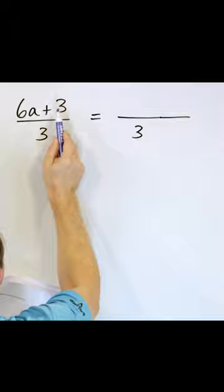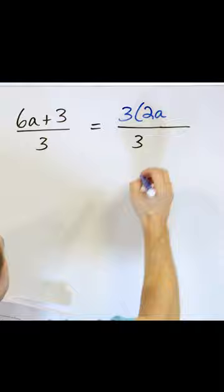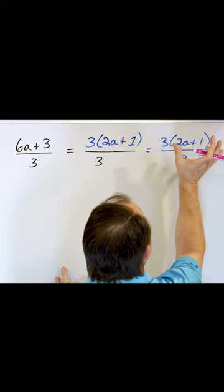So I can factor out a three and then three times something is 6a. I have to have a 2a here. Three times 2a is 6a and then I have to have a plus sign. And then three times something is three. I have to have a one here.